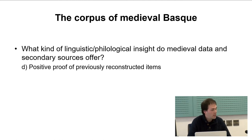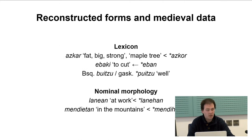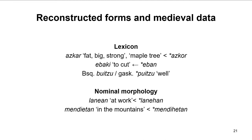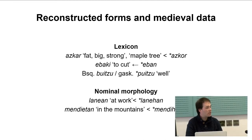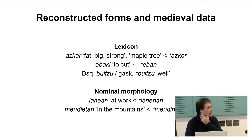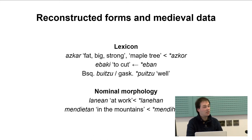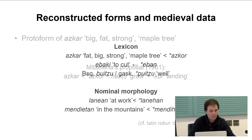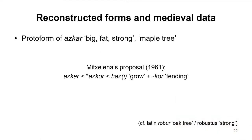Most importantly, as I said, we have found proof of previously reconstructed forms. The discussion of these forms will conform the third section of this presentation. I have gathered examples both from reconstruction of the lexicon — with the discussion of words like 'askar', 'evaki' to cut, and 'putzu' — and I have also brought here a couple of examples regarding the reconstruction of the definite declension, more specifically the reconstruction of the locative phrases singular and plural.